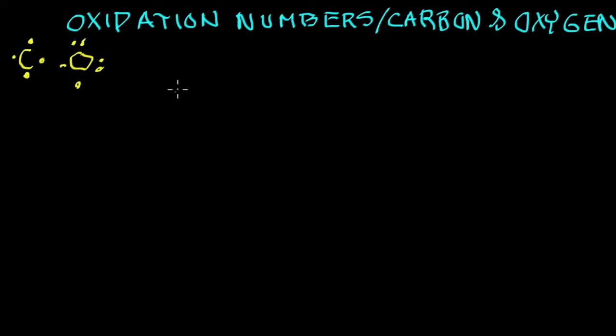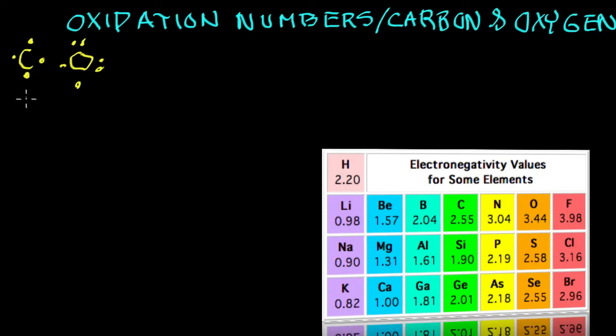Now when we learned about electronegativity, you can look that over in the bottom right hand corner of the chart. Electronegativity says that every element pulls electrons in a bond toward it differently. In this case, oxygen is more electronegative than carbon.